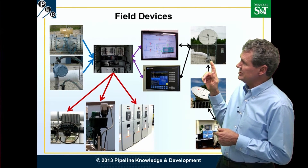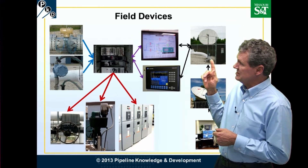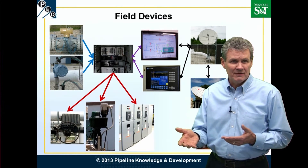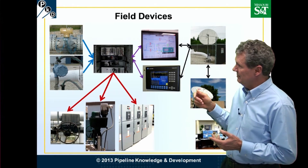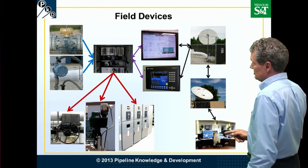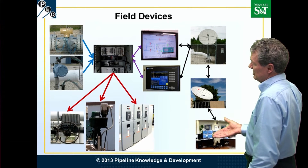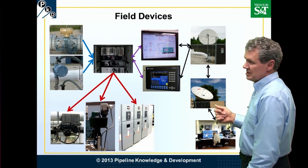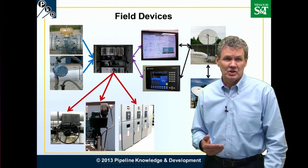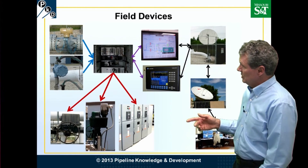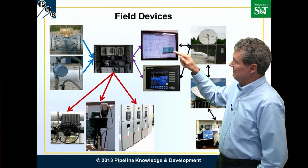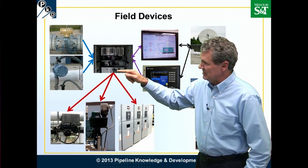We have a communication process — for example, a satellite dish at a particular block valve is sending the signal up, which then comes down to a base station, which then goes to a central control room where operators are making their decisions. Some of these arrows are shown two-directional and some one-directional, so there's communication going on through the process, information coming in and going back out again.